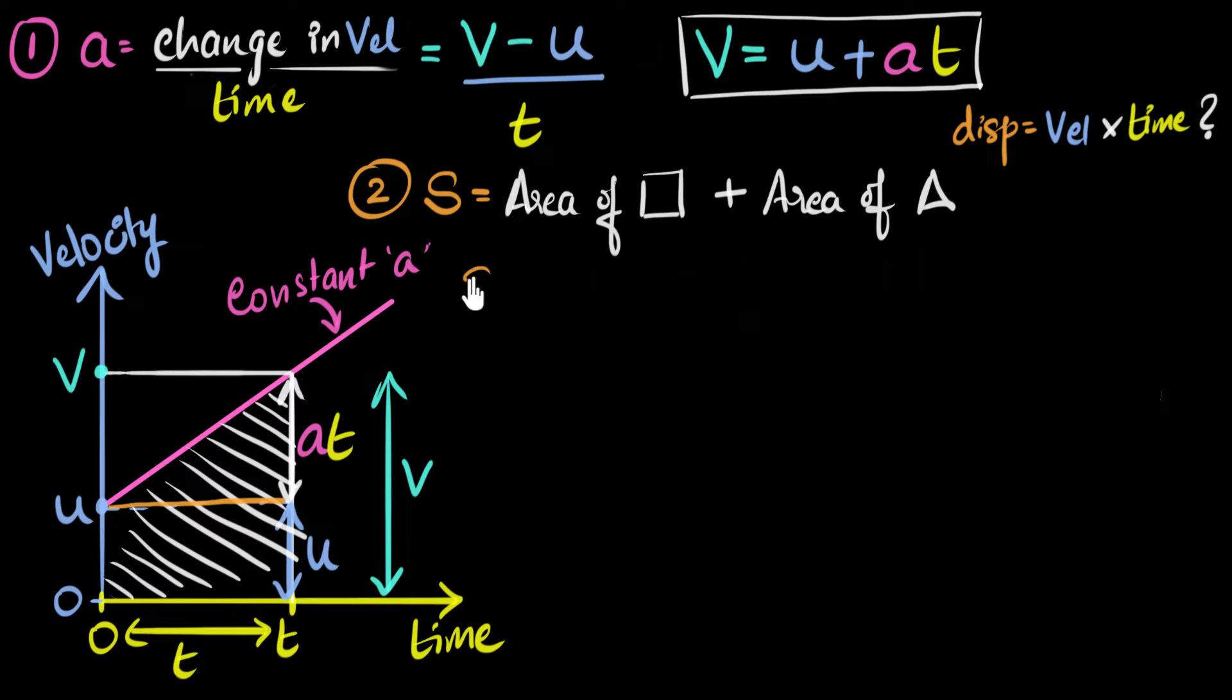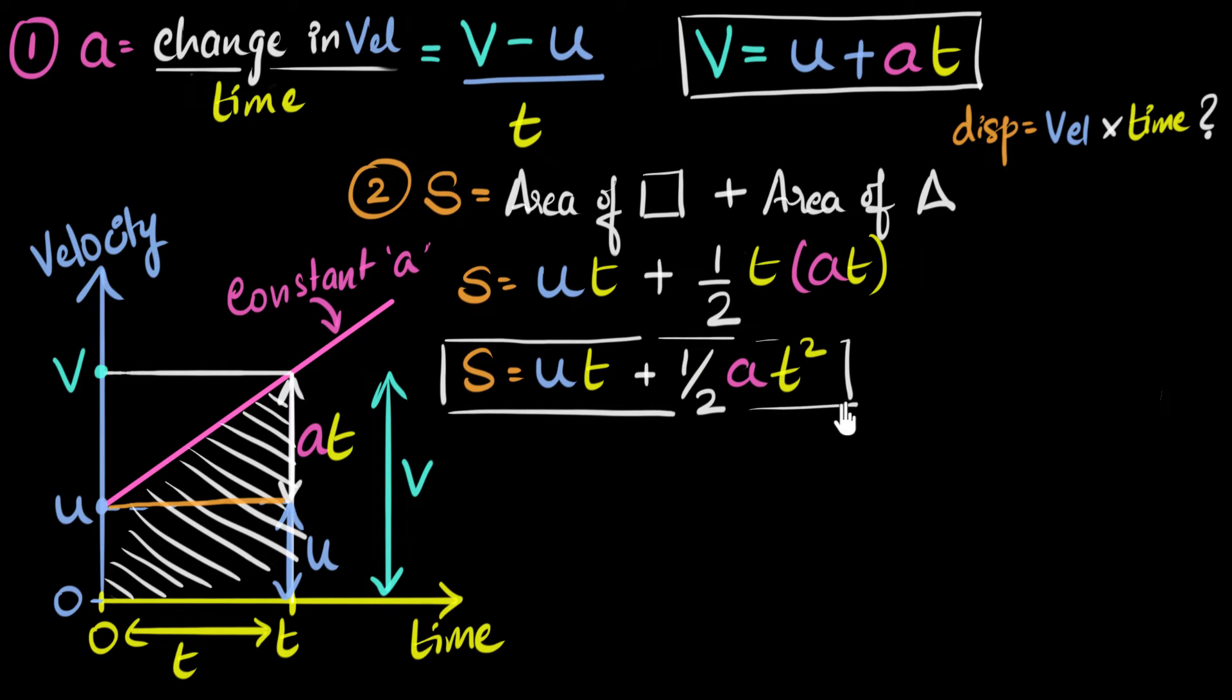All right. So, the area of our rectangle is going to be length into breadth, which is U into T. So, that's going to be UT plus, what's the area of a triangle? Well, that's half times base into height. So, half into base, which is T, into height of this triangle, which is AT. So, that's going to be A into T, and this gives us A into T squared. And so, our equation becomes S equals UT plus half AT squared. Two down, one more equation to go.